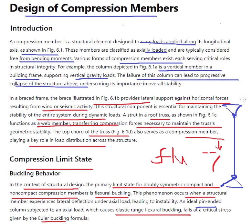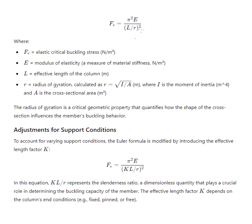Subject to an axial load, if you apply axial load to this pin-ended column, it causes elastic range flexural buckling and fails at a critical stress given by the Euler buckling formula. Here Fe equals pi squared E divided by (KL/R) squared, where Fe is the elastic critical buckling stress.